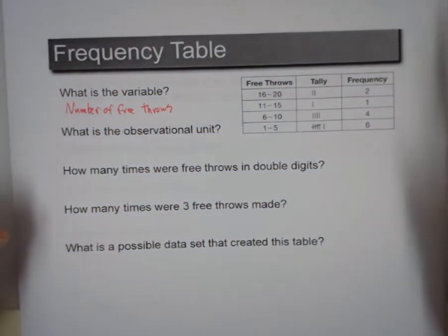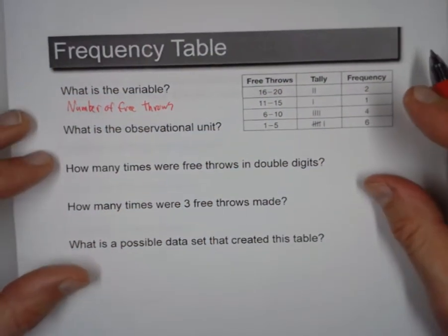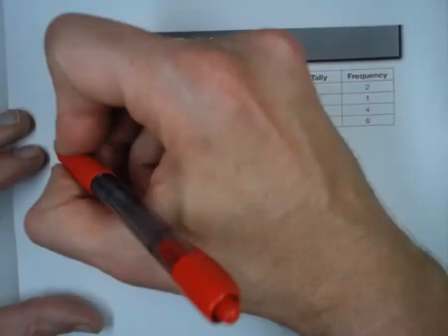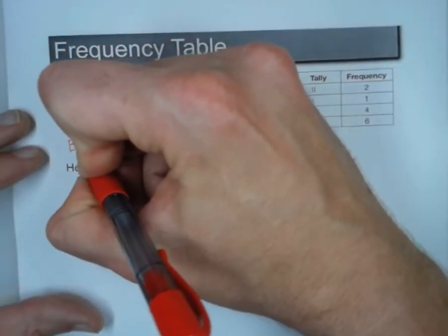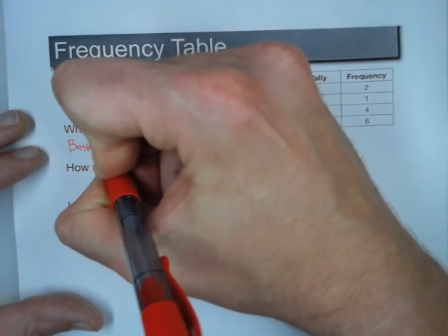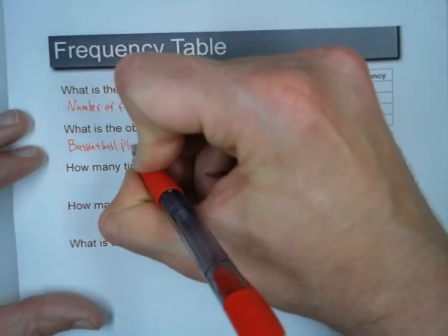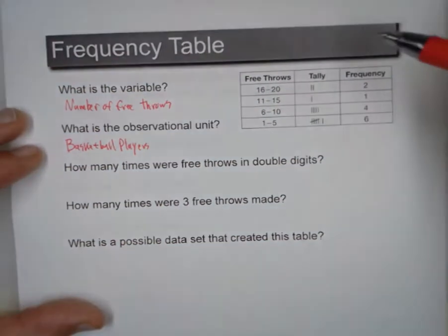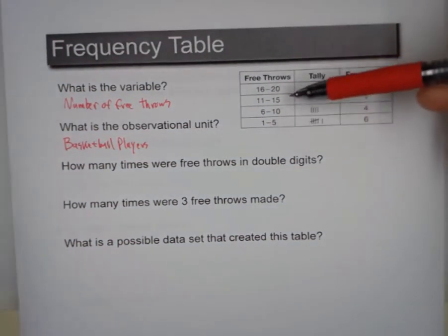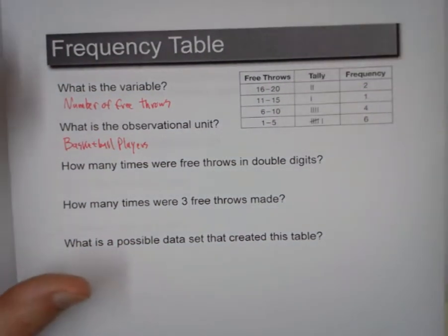Now what is the observational unit? There's actually two possible answers here. One is basketball players, or these are the number of free throws made or attempted by basketball players in a single game.